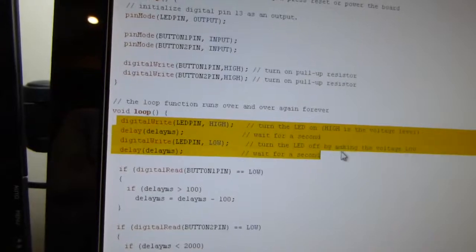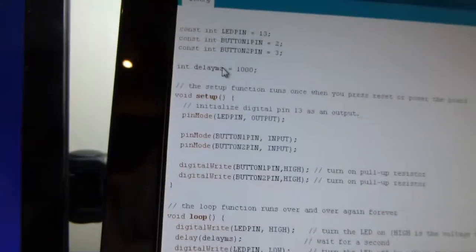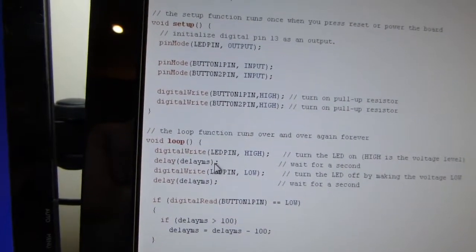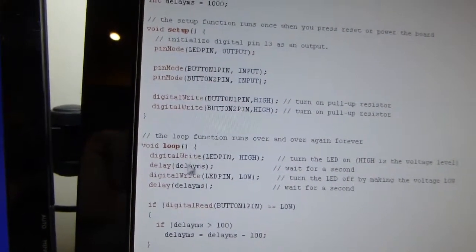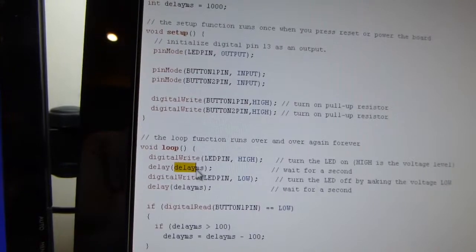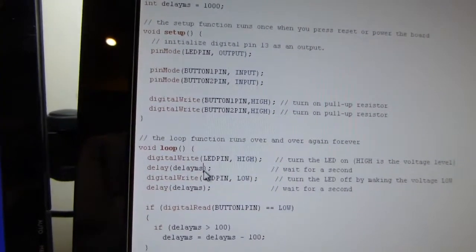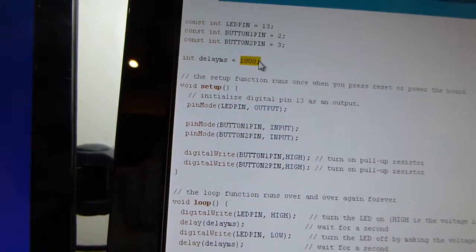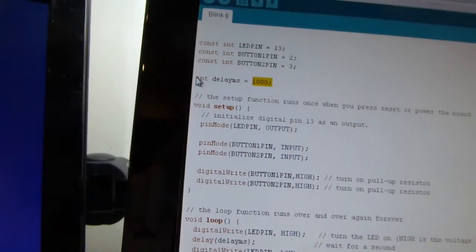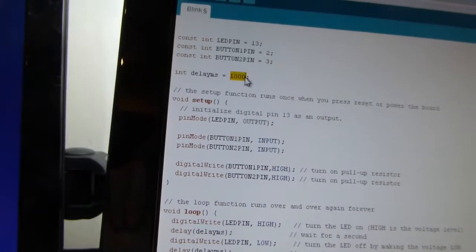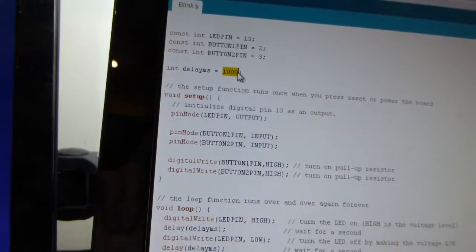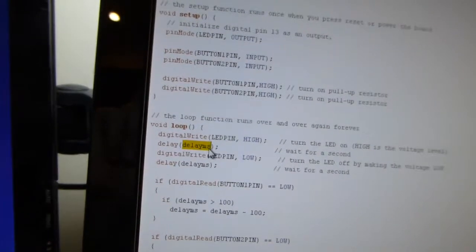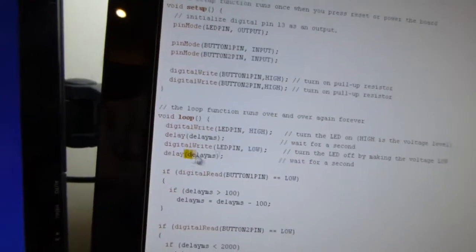And this part of the function here is the same as it was before except you also notice up here that instead of saying a thousand down here hard-coded, hard-coded just means that a thousand is typed straight into there. I've just set a value up here to a thousand. You notice this one does not say const because I'm going to change this value as the program runs.